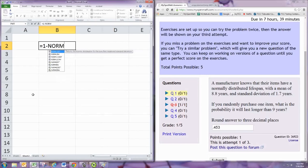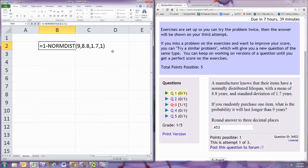And it's norm dist. And the x value is 9. The mean is 8.8. Standard deviation is 1.7. And you want cumulative. So that norm dist part finds probability that it's less than nine years.